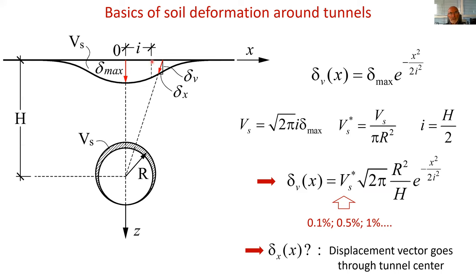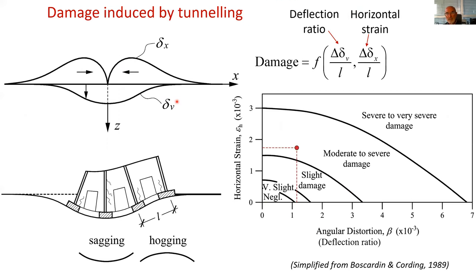It turns out that the motion of a point at the surface is not purely vertical — it is a vector that points approximately toward the center of the tunnel. If you know the expression for the vertical displacement, you can immediately calculate the horizontal displacement from the geometry of this triangle. Both vertical and horizontal displacements are of concern when thinking about damage to structures.